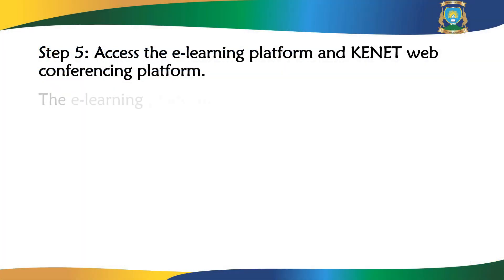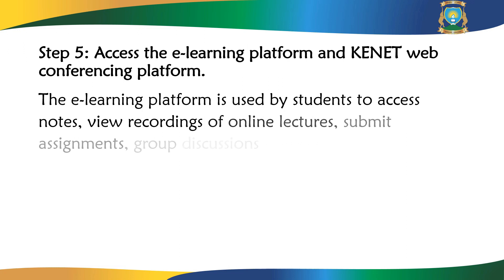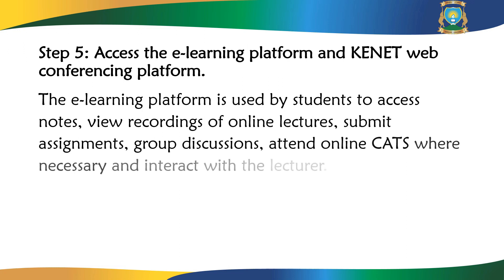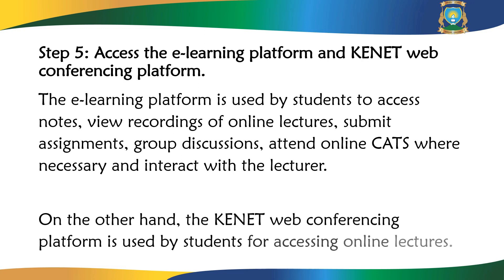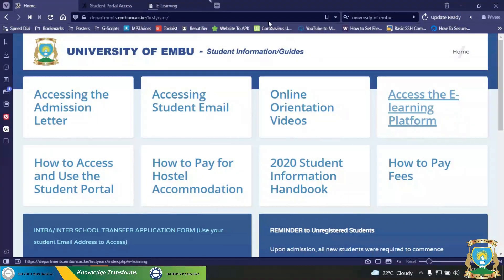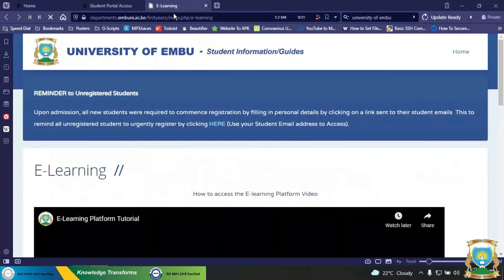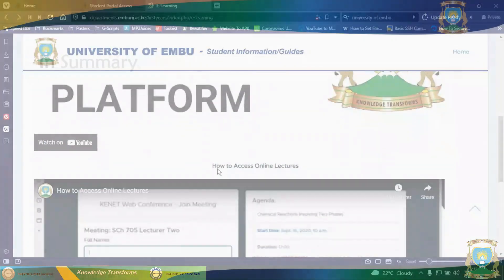Step 5: Access the e-learning platform and Keynet web conferencing platform. The e-learning platform is used by students to access notes, view recordings of online lectures, submit assignments, participate in group discussions, attend online classes where necessary, and interact with the lecturers. The Keynet web conferencing platform is used by students for accessing online lectures. Please click here on Student Resources to see a brief tutorial on how to access and use both platforms.